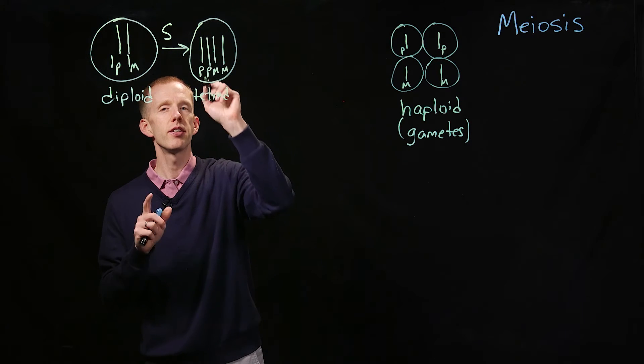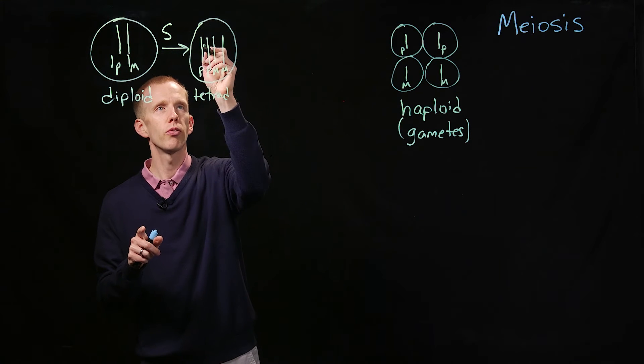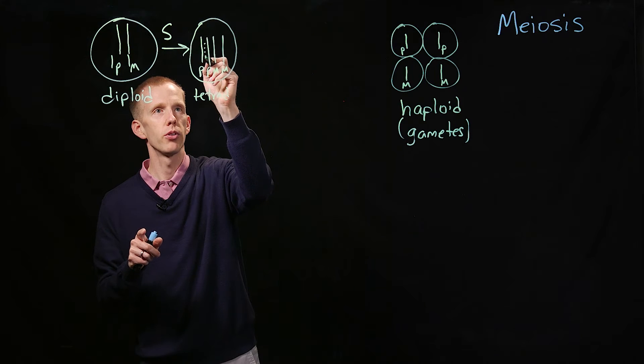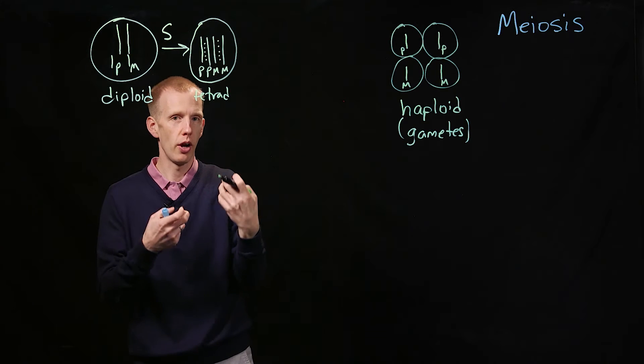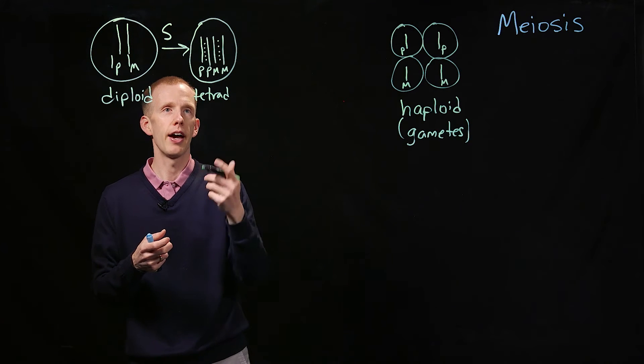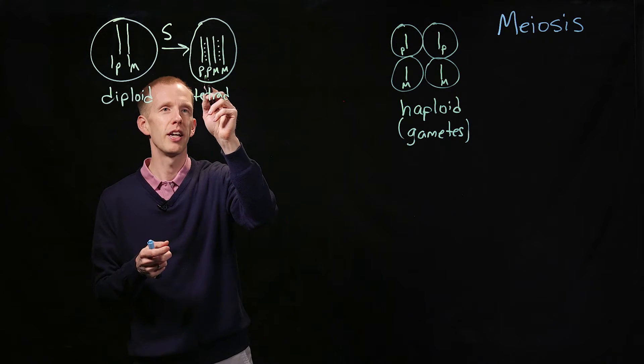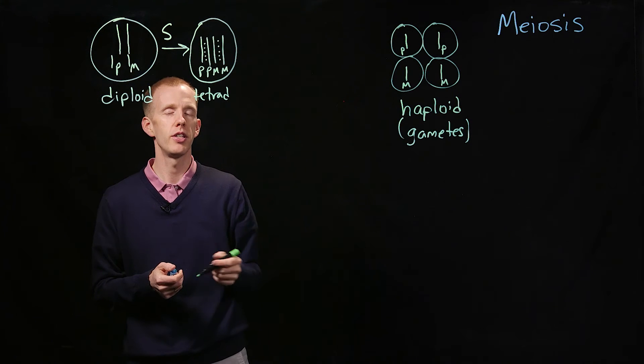And the sister chromatids, the two paternal versions of the molecules of DNA, are held together more tightly, and the two maternal versions are held together more tightly than the paternal two DNA molecules to the two maternal DNA molecules.